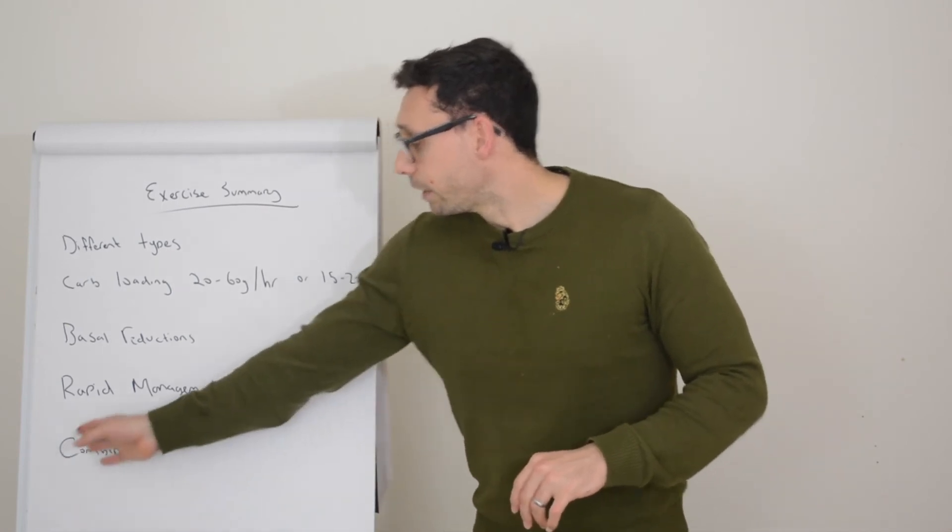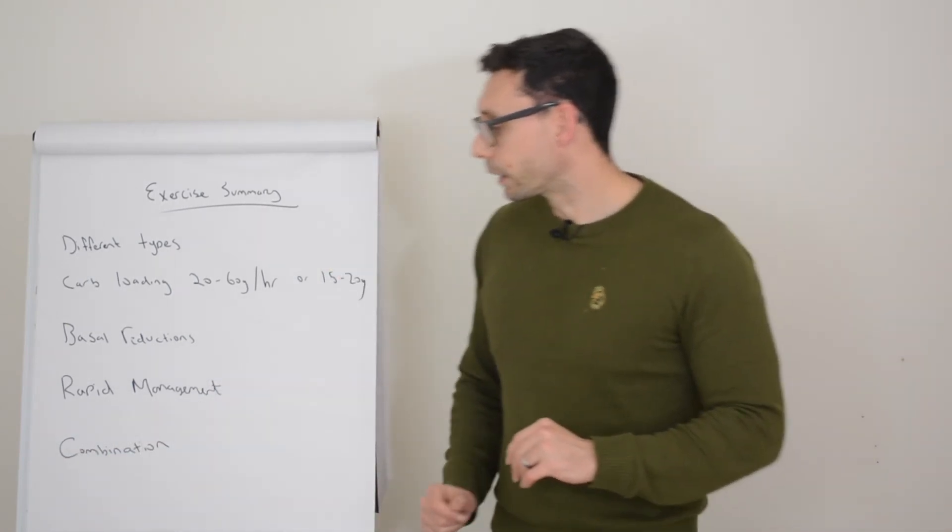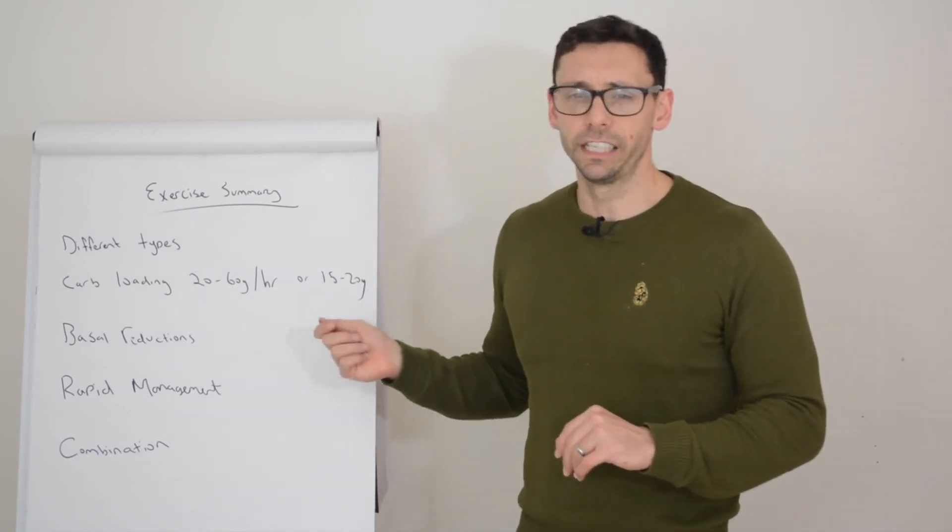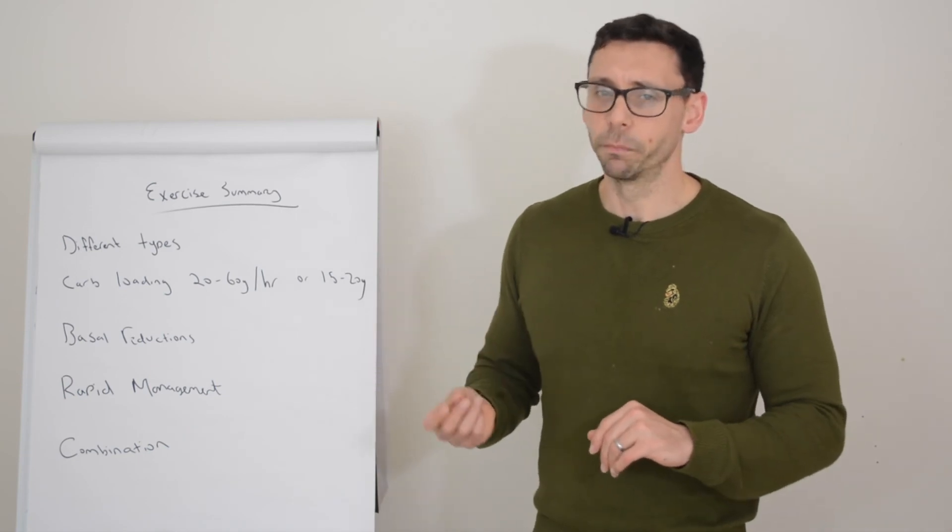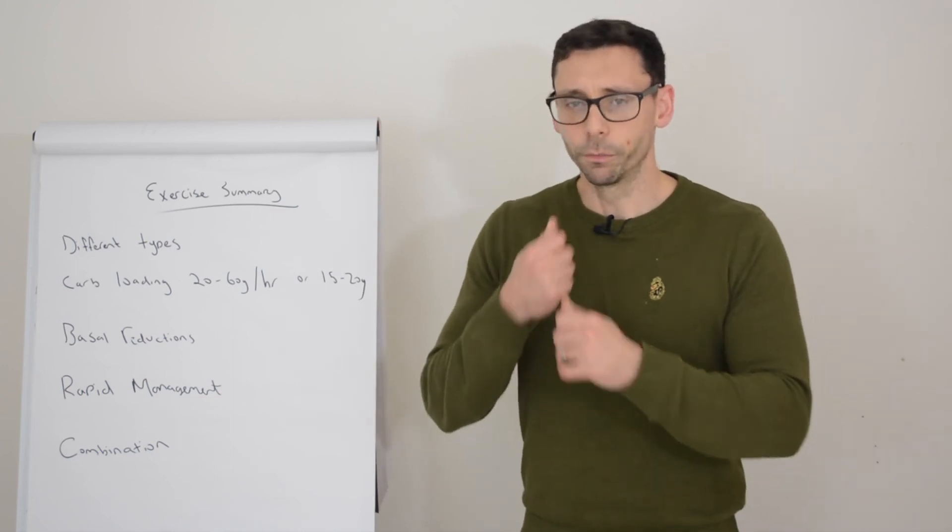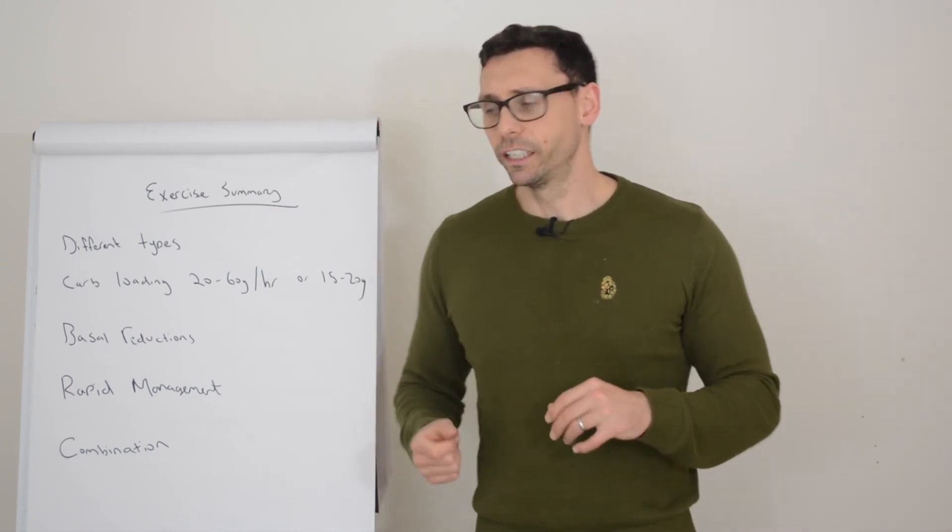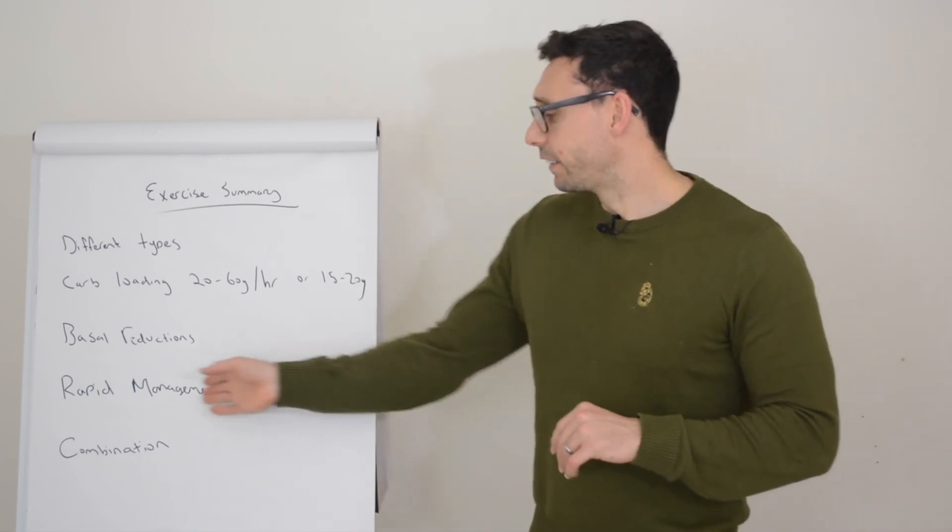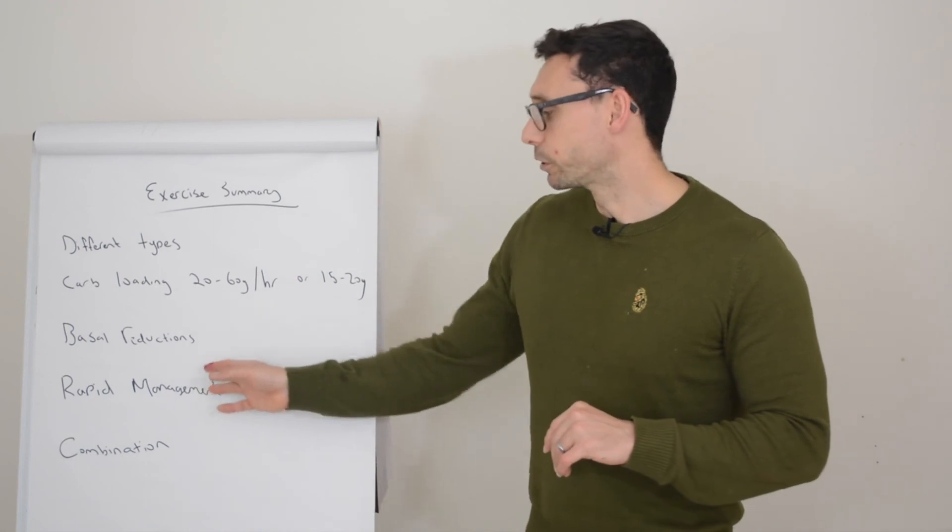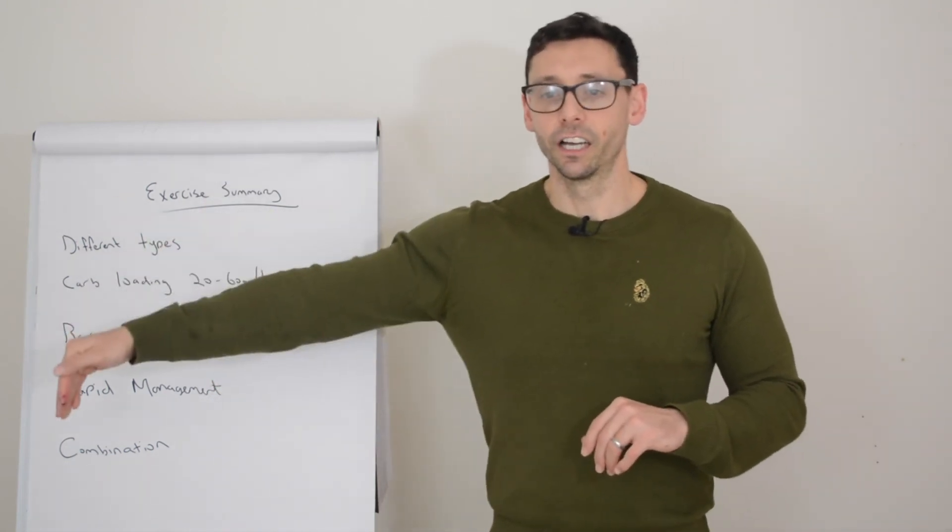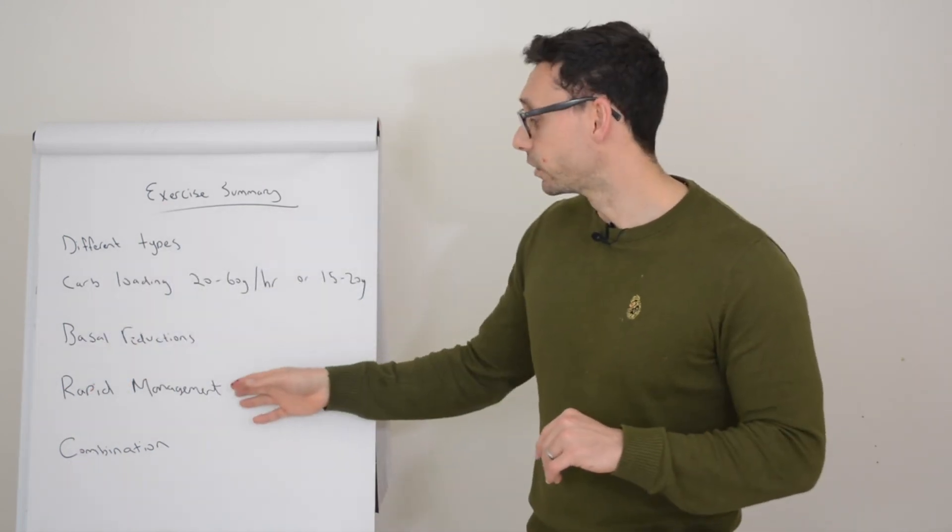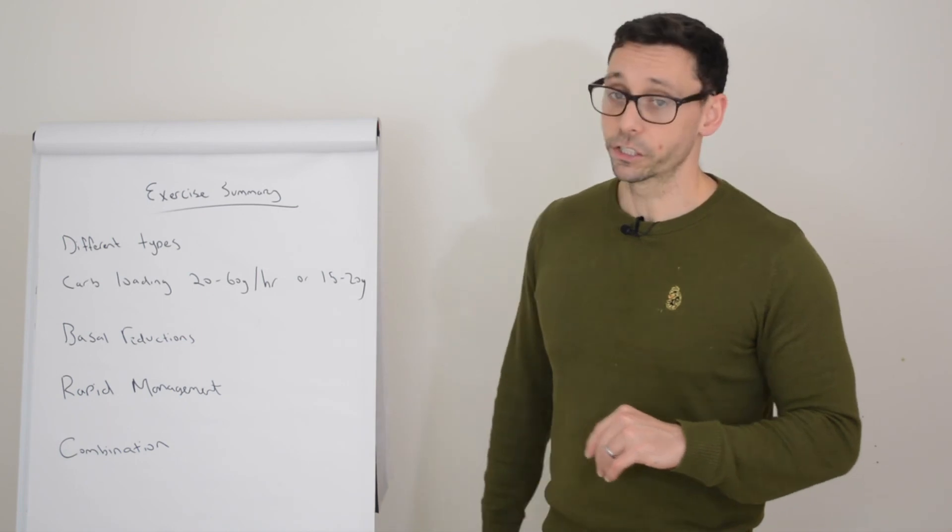To really sum up, in reality most people use a combination. They will fuel their exercise with some additional glucose, particularly in times of need when they see their levels dropping during the session, so they'll take something on board like glucose tablets or a glucogel, or any form of gel with glucose in it. They might have a sports drink and then they'll also reduce their rapid insulin. Pump users will reduce their basal insulin, may also reduce their rapid insulin at later meals in the day after exercise, perhaps before as well, and might even take on some additional carbohydrates.